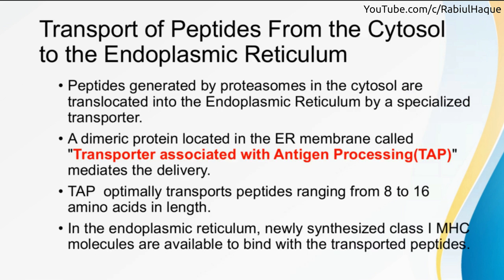Moving on to the second step: transport of peptides from the cytosol to the endoplasmic reticulum. Peptides generated by proteasomes in the cytosol will be translocated into the endoplasmic reticulum by a specialized transporter — a dimeric protein located in the endoplasmic reticulum membrane — called TAP, which stands for Transporter Associated with Antigen Processing. TAP will optimally transport peptides ranging from 8 to 16 amino acids in length.